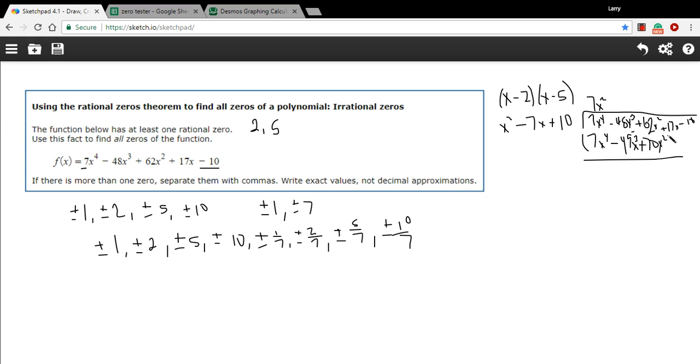All right. Then we subtract this whole thing, being very careful with the signs. So the leading terms disappear. I've got a negative 48x cubed minus a negative 49x cubed. That's a positive x cubed. And then I've got a 62x squared minus a 70x squared. So that's a negative 8x squared. And we bring down one more term, the 17x plus 17x. A little scrunched in the corner here, but we'll do what we can. Now, next question. I want to get x cubed. What do I have to multiply x squared by? Well, that's just x.